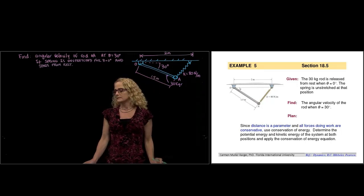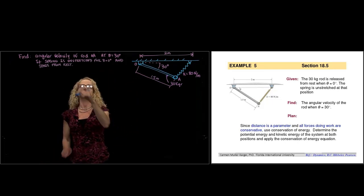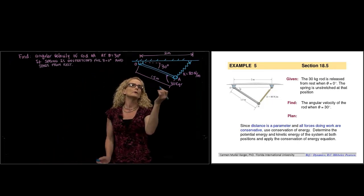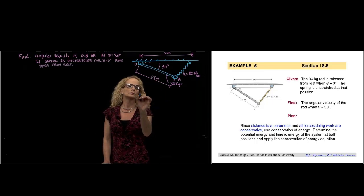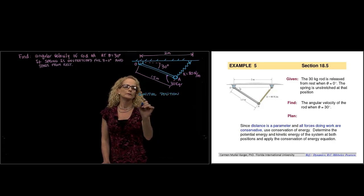They tell us that the spring is unstretched when theta equals 0 and it starts from rest. So if we want to draw the initial position, it will be something like that.